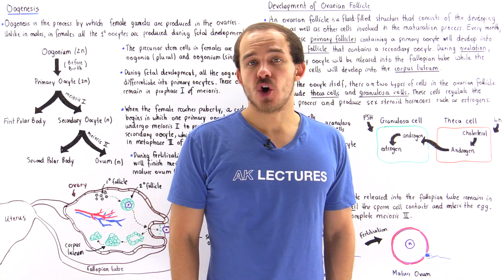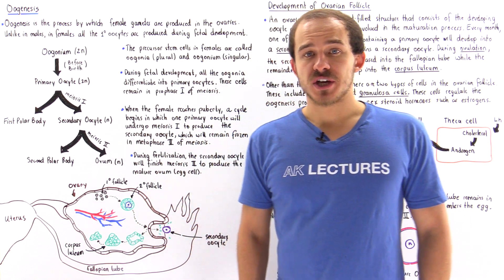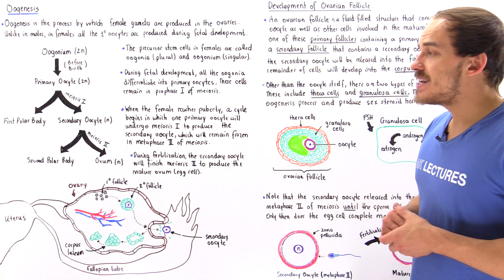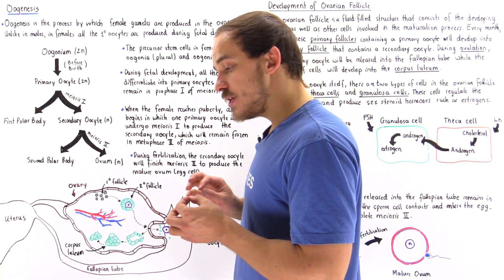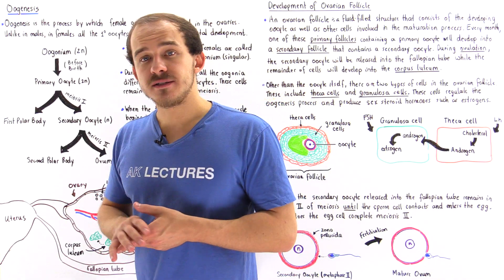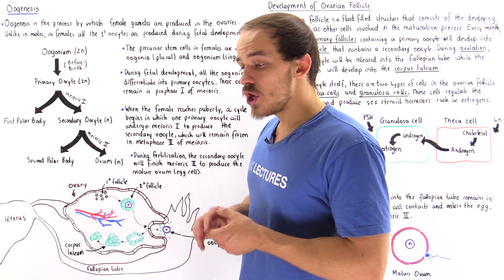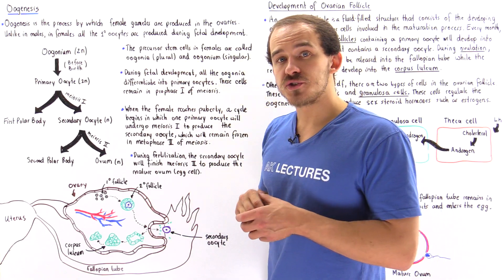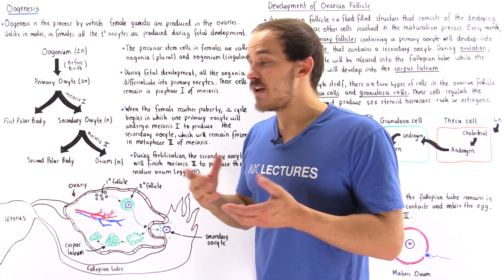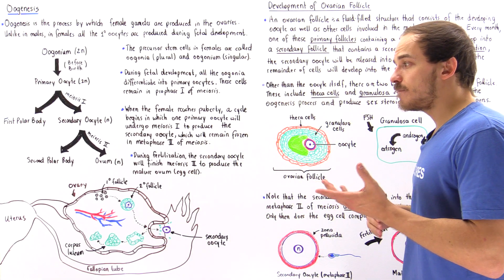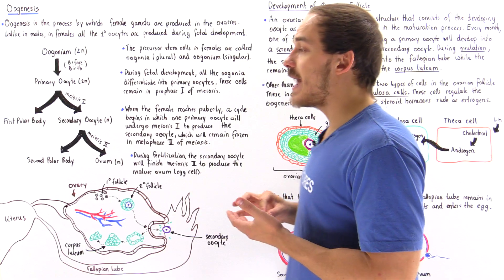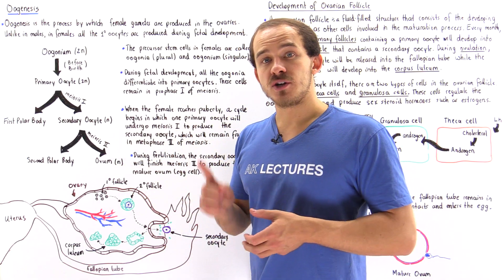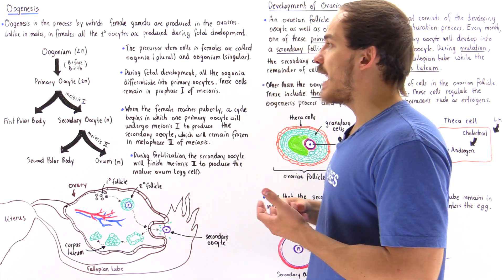The female gonads are known as the ovaries, and inside the ovaries an important process known as oogenesis takes place. Oogenesis is the process by which special stem cells found inside female individuals, known as oogonium or oogonia, basically differentiate and eventually develop into the female gametes — the female sex cells known as egg cells or ovum. An ovum is a single egg cell, while ova means many egg cells.